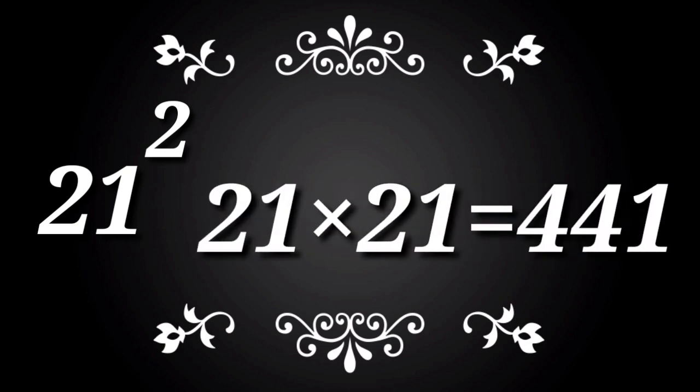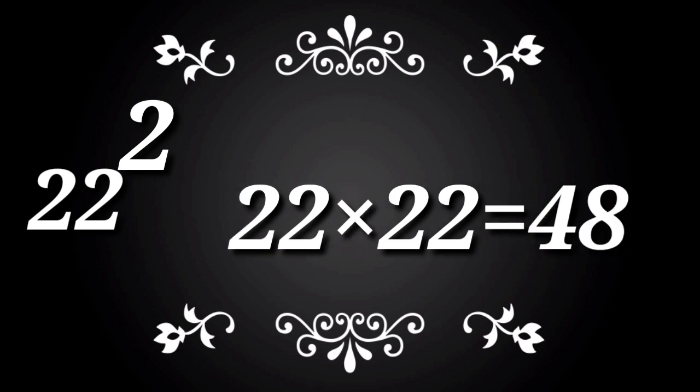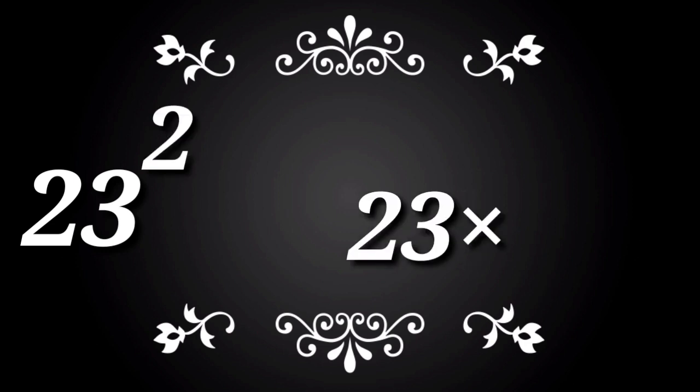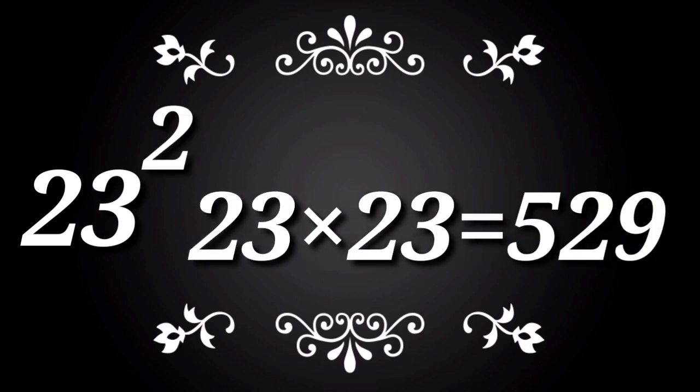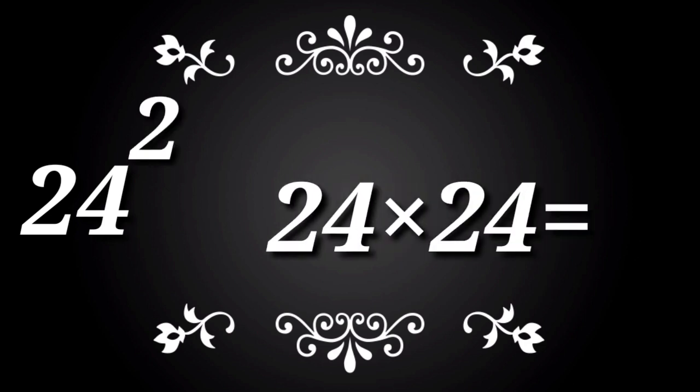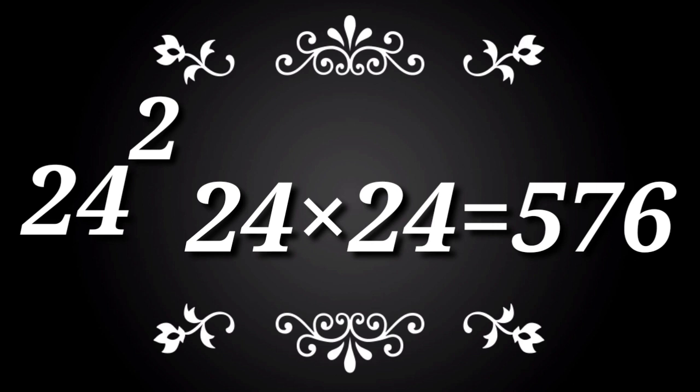21 square. 21 into 21 is equal to 441. 22 square. 22 into 22 is equal to 484. 23 square. 23 into 23 is equal to 529. 24 square. 24 into 24 is equal to 576.